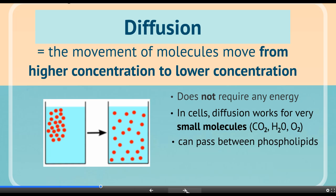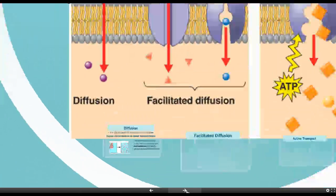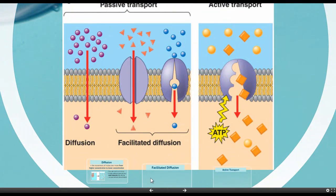These are like the golf balls that can easily move through a volleyball net. So with simple diffusion, we have very small molecules that can fit in the spaces in between the phospholipids.